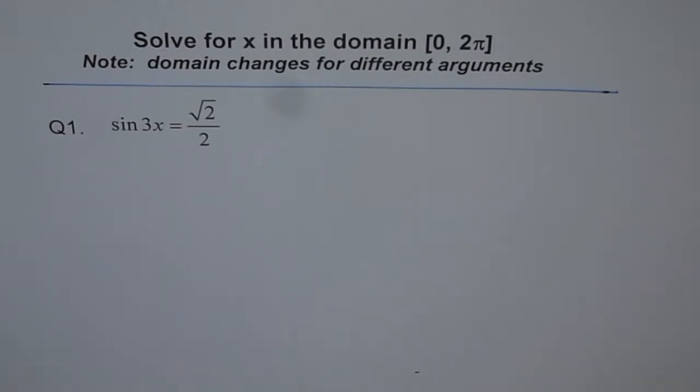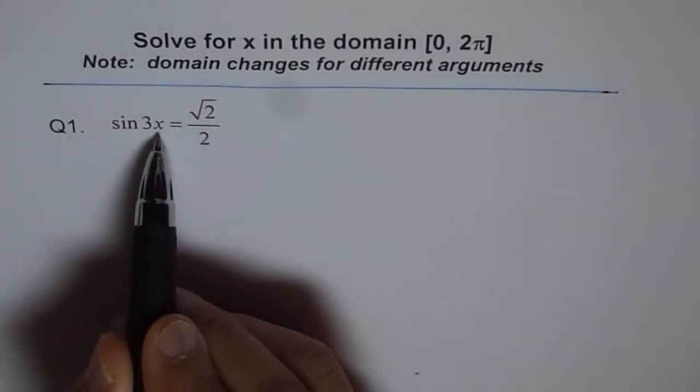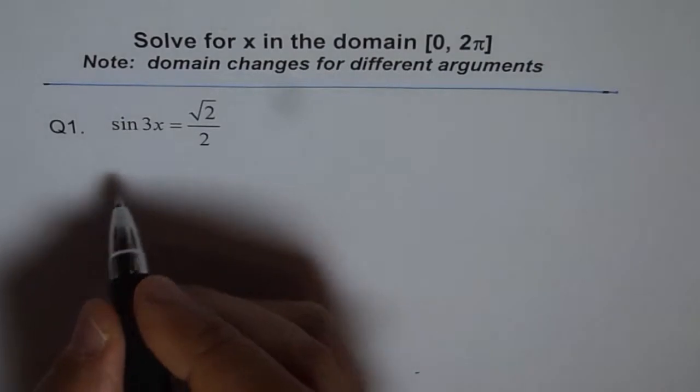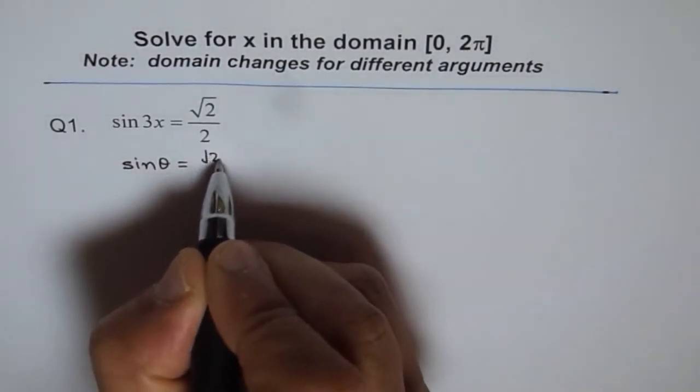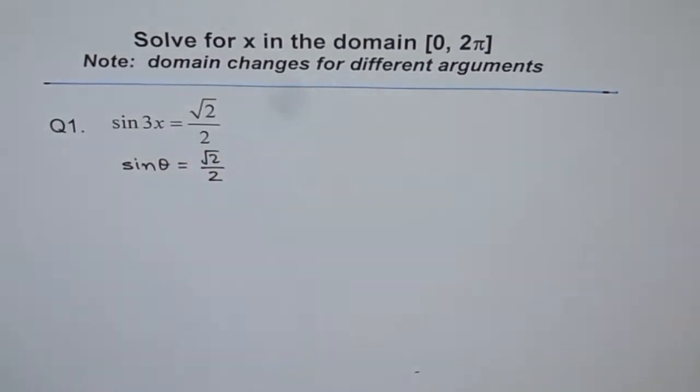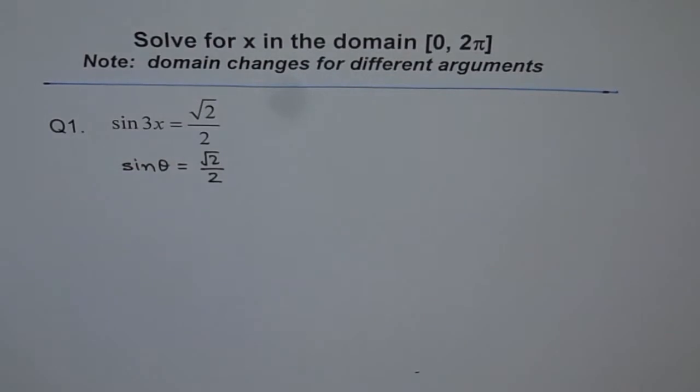And our idea here is to teach you how the domain changes when the argument changes. And when I say argument, I mean this. Sin 3x, so this has become 3x, it's just no more x. You should consider this as sin theta equals square root 2 over 2. So the angle is theta. That is the argument for our trigonometric function which we are talking about, the variable which we are working with.